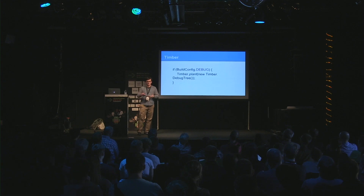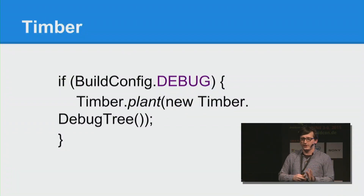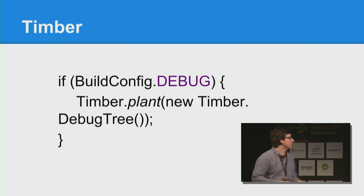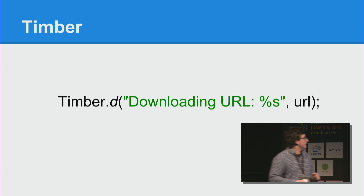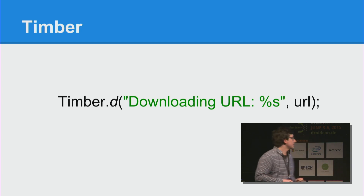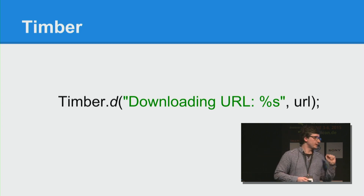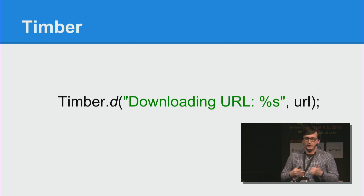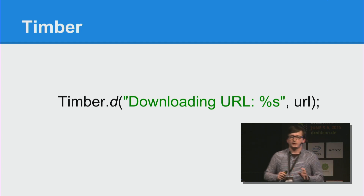With Timber, we plant a tree — the debug tree. If we have a BuildConfig.DEBUG in our application initialization class, it plants the tree. We have a tree, we have logs. We don't have a tree, we don't have logs. It's that simple. Logs are modeled after the native Log class, so we have different verbosity levels like error and so on. We can use printf format. One thing you might notice: there's no tag. You don't have to put a tag in every class. Timber detects which class is calling it and shows that in the log. Really simple, but saves you a lot of time and worry about whether you deleted your logs.